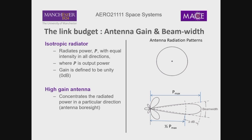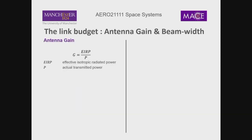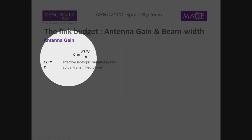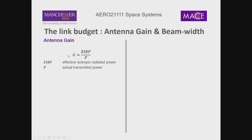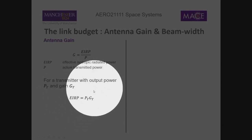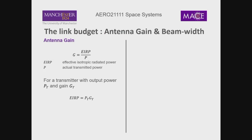Remember, this is a two-dimensional representation of what happens in three dimensions. The isotropic radiator is a sphere; the high-gain antenna is a cone-like shape with small side lobes. We can define the effective isotropic radiated power (EIRP): for a transmitter with output power Pt and gain Gt, the EIRP is Pt × Gt. Increasing gain increases the effective power at the receiver, which improves signal-to-noise ratio.